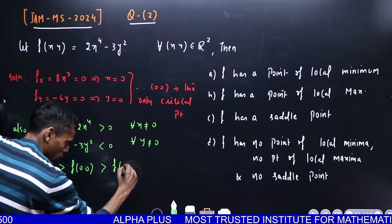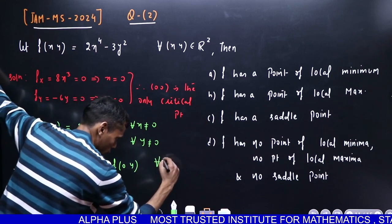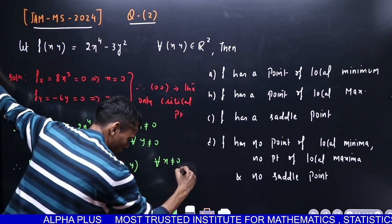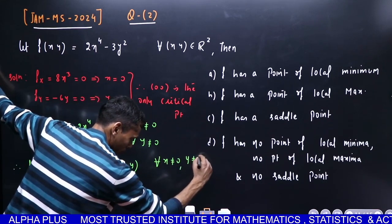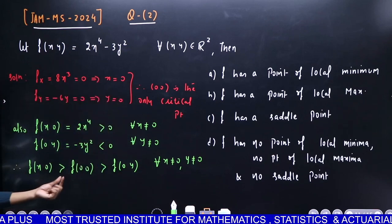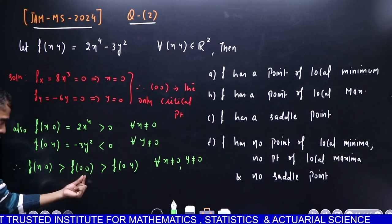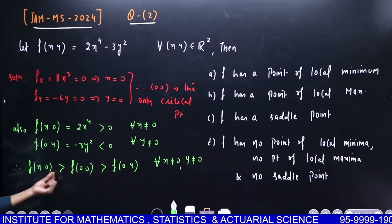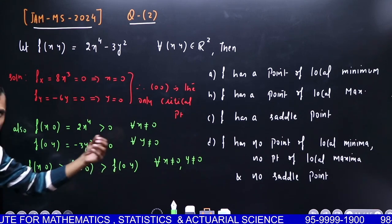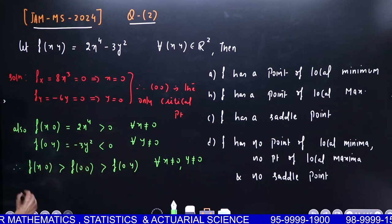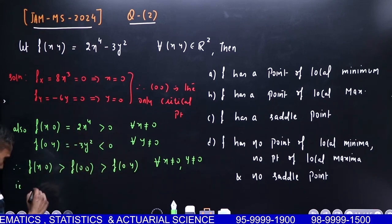Therefore, f(x,0) on the x-axis is strictly greater than f(0,0), which is strictly greater than f(0,y) whenever x is non-zero and y is non-zero. Looking at the entire x-axis and y-axis, you can see that f(0,0) is greater here and less there. This means (0,0) is acting like a maxima in one direction and a minima in another direction. Therefore, (0,0) is neither maximum nor minimum - it's a saddle point.